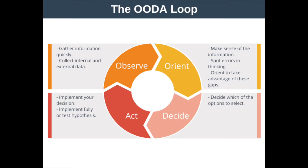You start with Observe — you're seeing what's going on, noticing all the stuff around you, taking in all the inputs. Then the next step of this decision-making process is you Orient yourself. You start to position yourself in the scenario and you start playing through the logic of: if X is this, then Y is that — beginning to get into a position to respond.